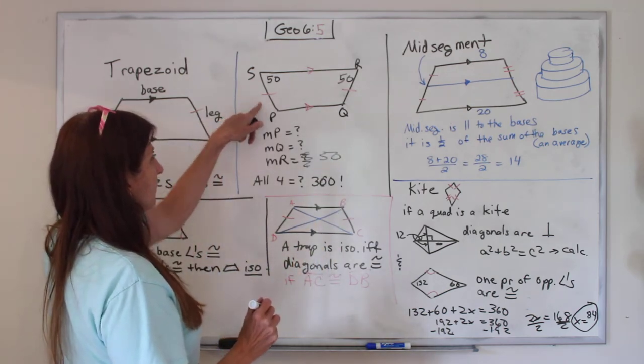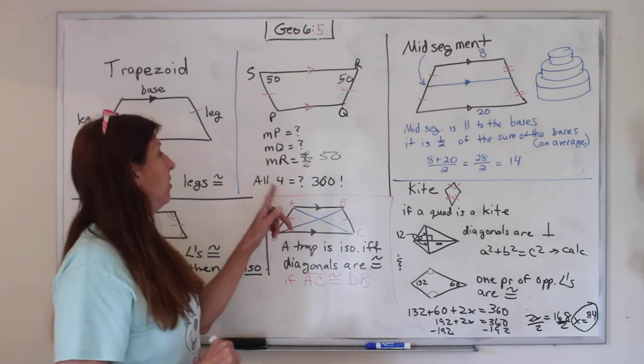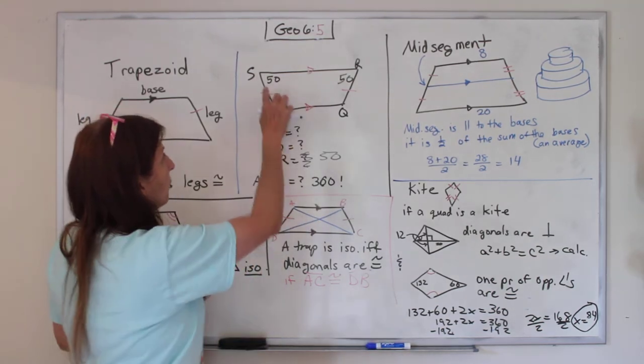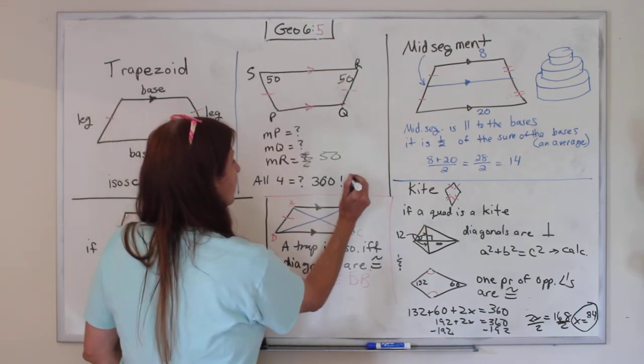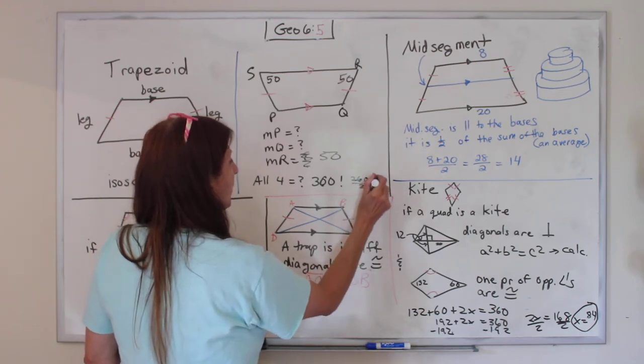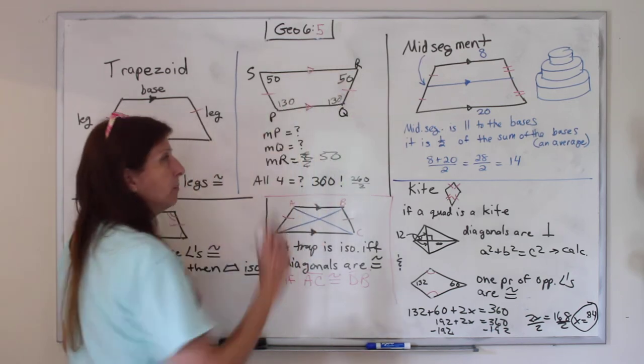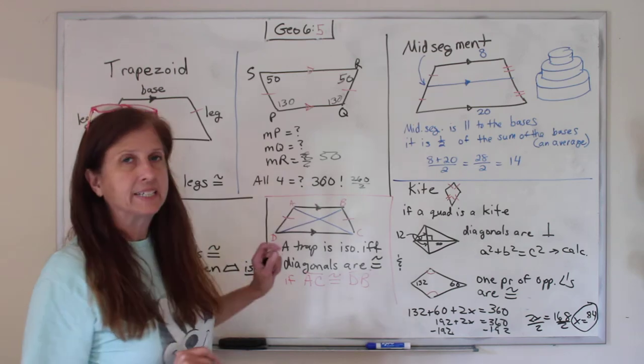Now, but what about these? Here's our clue. Remember, for any quadrilateral, all four sides equal 360. So 50 and 50 is 100. 100 minus 360 is 260. 260 divided by 2 is 130. So those have to be 130, if I did my math in my head right, for them all to add up to be 360.